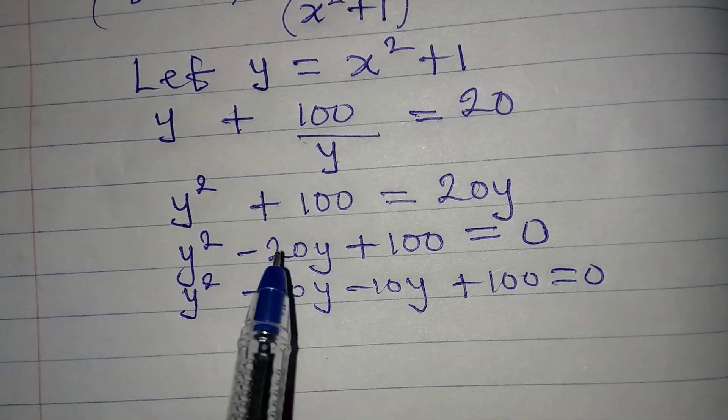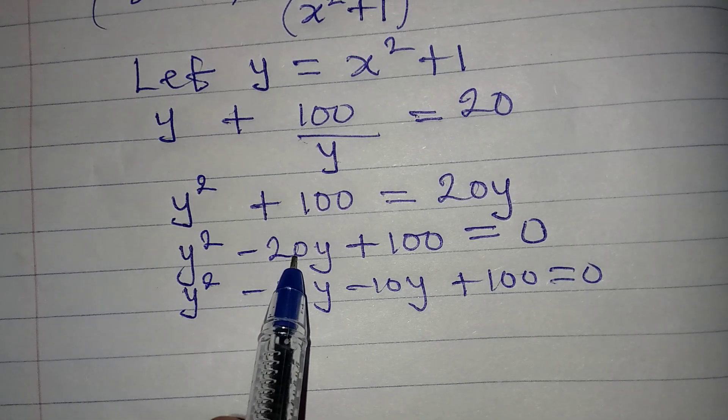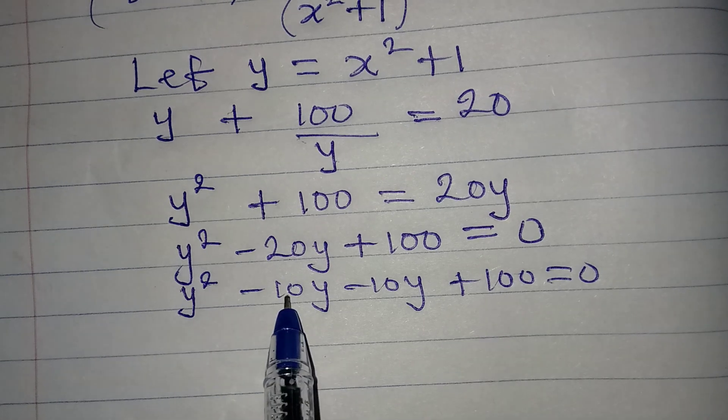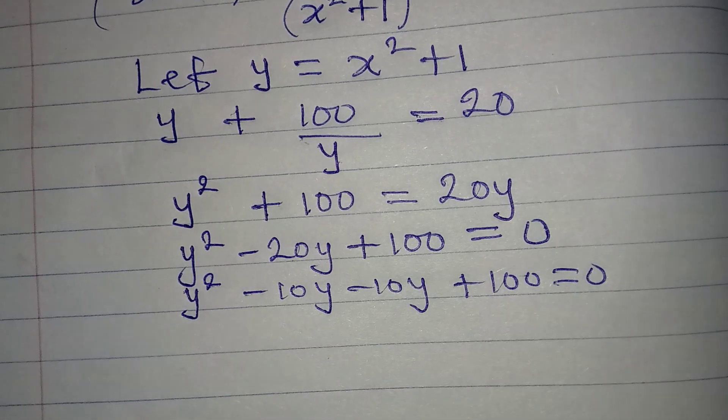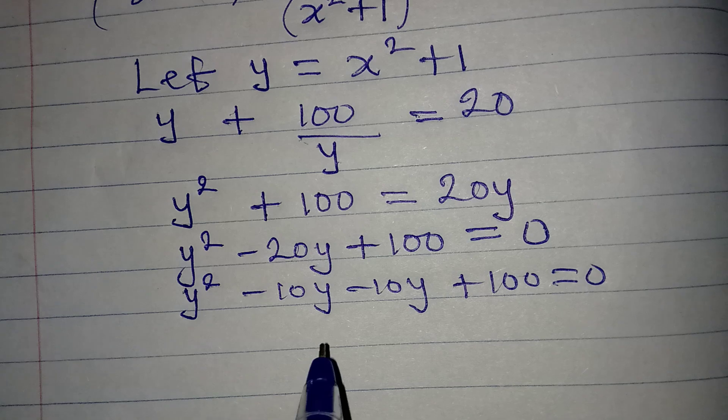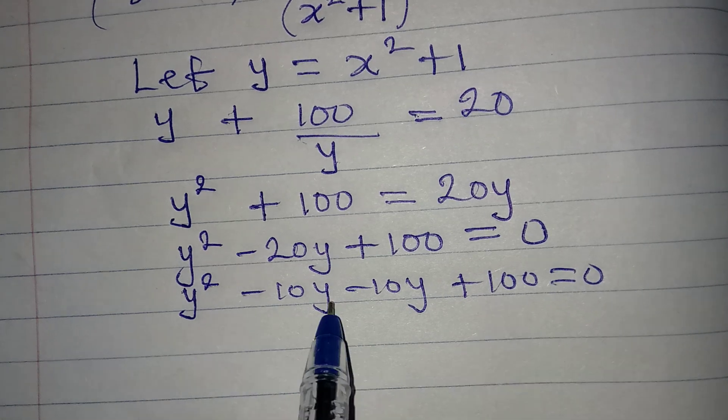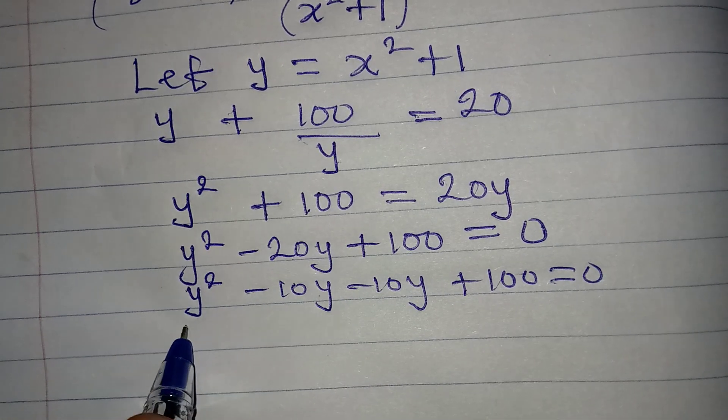So minus 10y minus 10y will give us minus 20y, then minus 10 times minus 10 will give us plus 100. Now we will group into two and factorize.